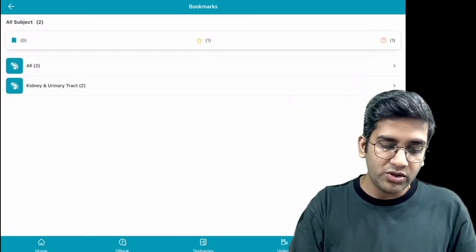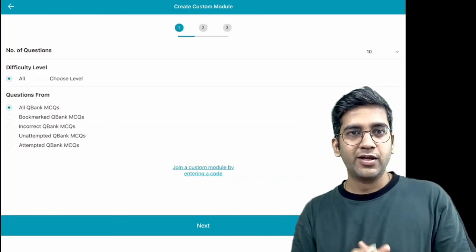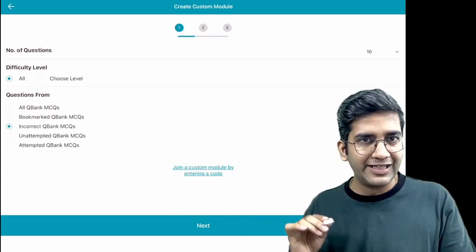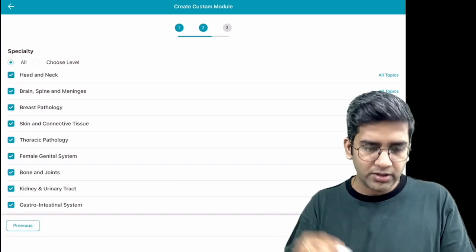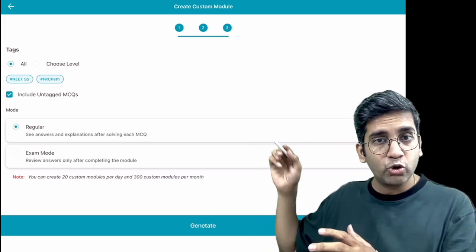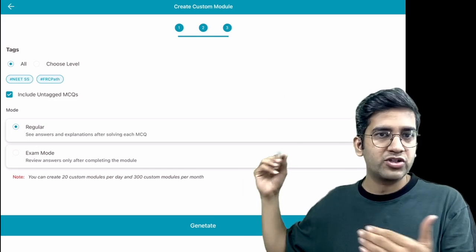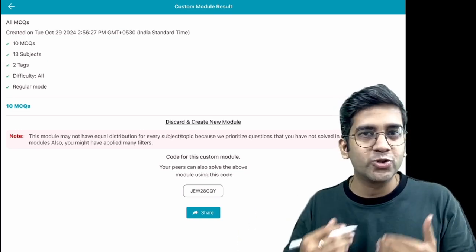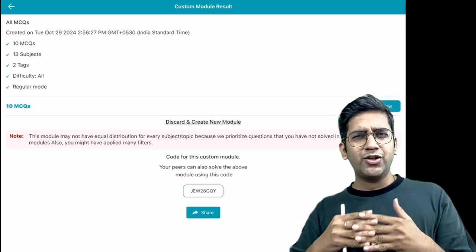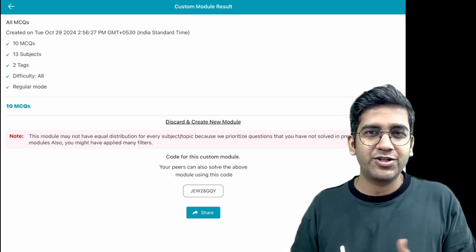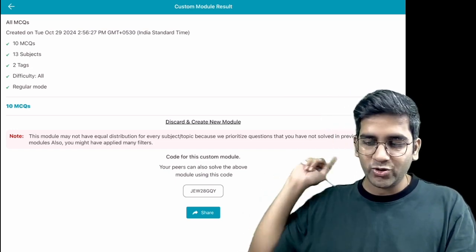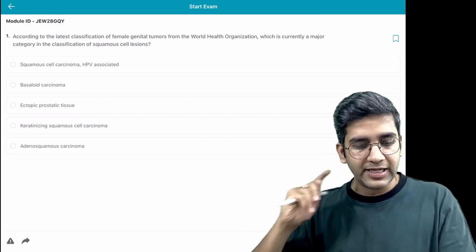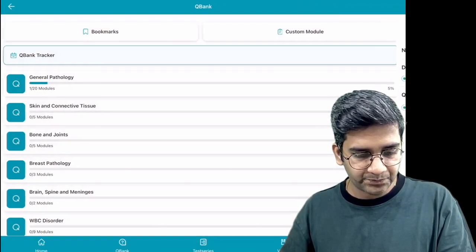Now the beauty of this is custom module. Custom module is something where you've done the entire Q-bank but want to practice again. You can say all the Q-banks, or the bookmark ones alone, or the incorrect ones alone. Choose whatever you want and create. You can do a regular mode or an exam mode. Regular mode is like a Q-bank and exam mode is like a normal exam. Generate something and you can share it with your friend. They can also write it and compare how you're doing. RXDX will connect you wherever you are remotely. Send this code and they can easily write the exam.